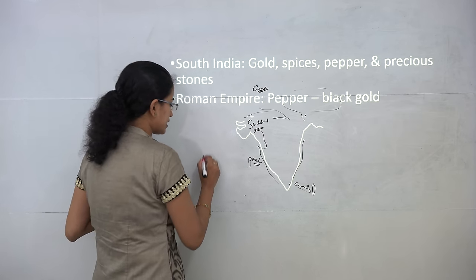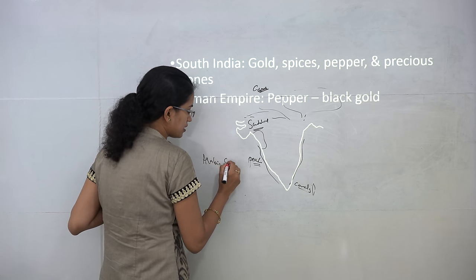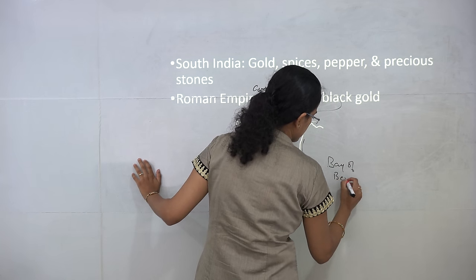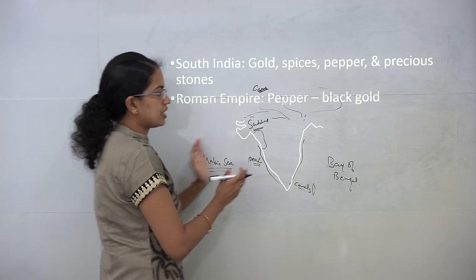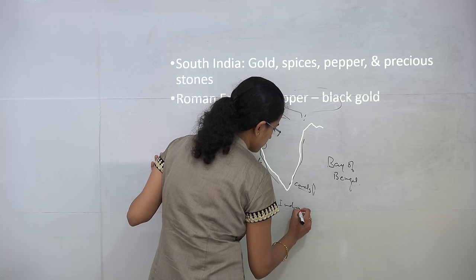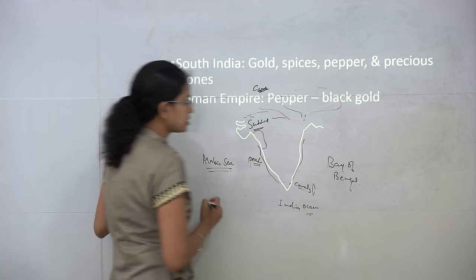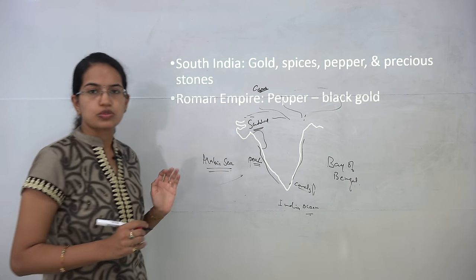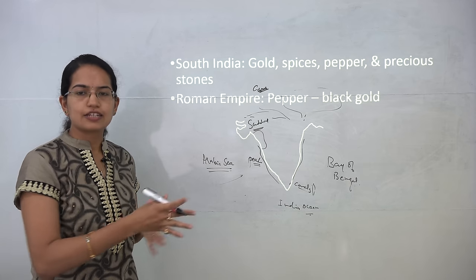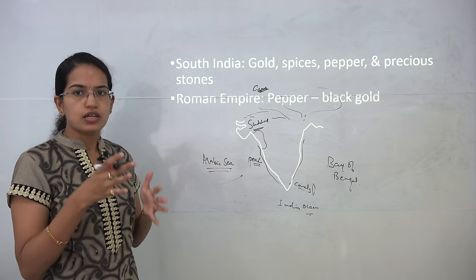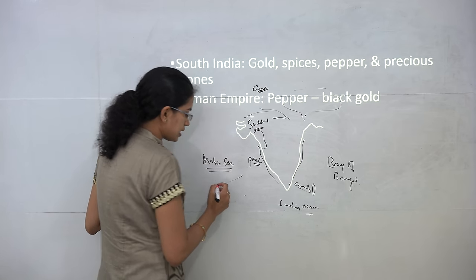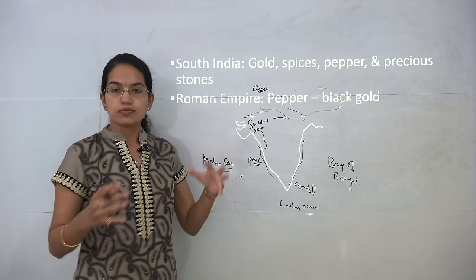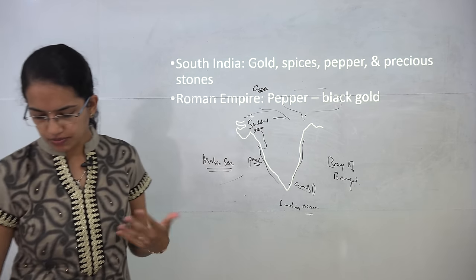Traders at that time had a basic understanding of wind direction and a very good sense of navigation. India has the Arabian Sea, Bay of Bengal, and the Indian Ocean to the south. Sailors moved along the direction of the southwest monsoon to gain maximum benefit from the wind. Their ships were sturdy enough to move along that direction.